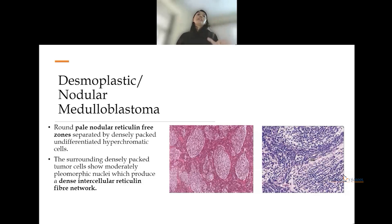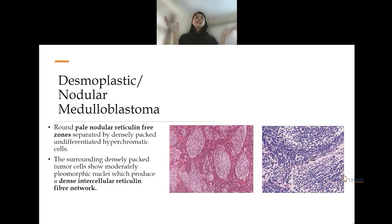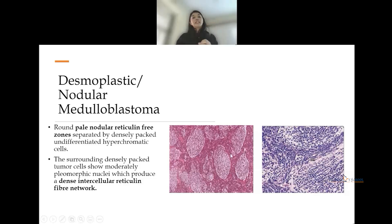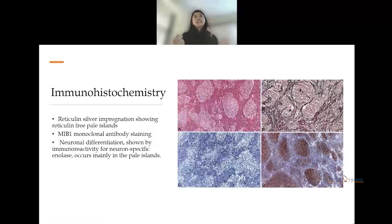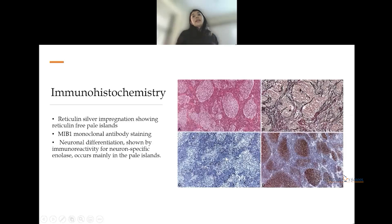The next variant is desmoplastic nodular medulloblastoma. It shows nodular pale zones surrounded by dense hypercellular zones with undifferentiated cells in the dense perinodular zones. These perinodular zones produce reticulin. On reticulin impregnation staining, the dense areas are highlighted and the pale islands are prominently seen. The MIB-1 proliferation index shows high proliferation of tumor cells in the dense areas.